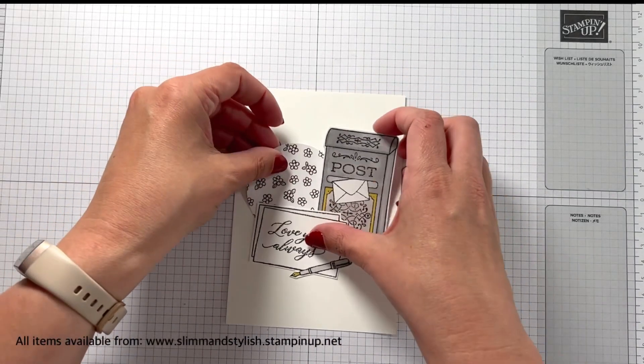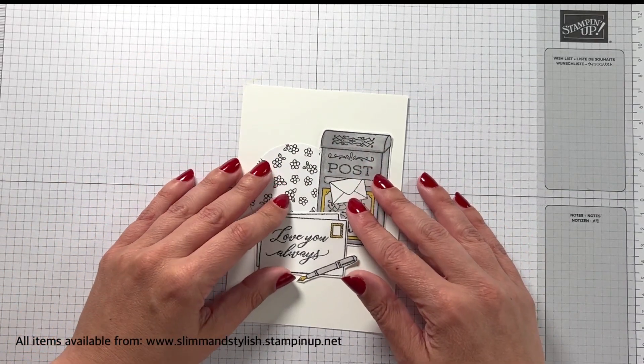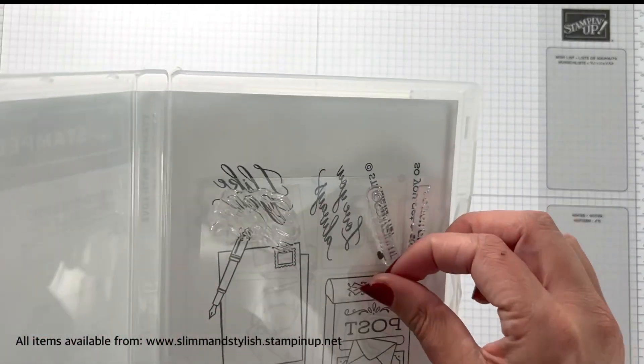Now what you could have done is if you have done the post box in red or you've coloured it in in any sort of colour, you could use these flowers and you could colour those in with your blends to add that colour into your card and make it still pop. That would work as well.